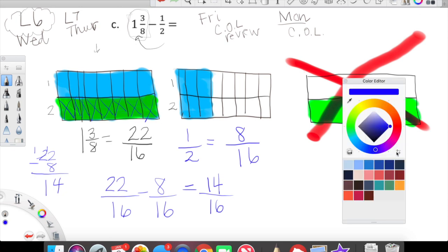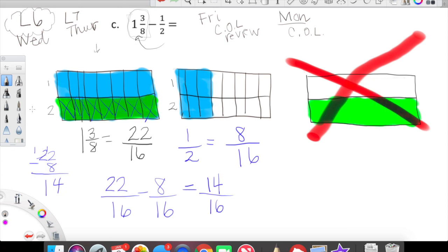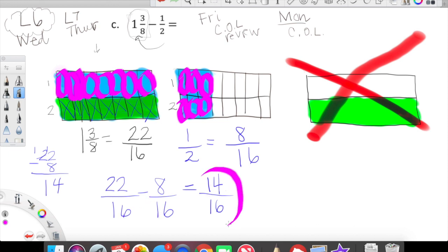One half is this one row shaded in green. We found that one half is equivalent to 1, 2, 3, 4, 5, 6, 7, 8 sixteenths. What we're looking at here is that one and three eighths is equivalent to 22 sixteenths and one half is equal to eight sixteenths. So we're looking at 22 sixteenths minus eight sixteenths. What is 22 minus eight? 14. We have fourteen sixteenths. Indeed. I've just modeled 22 sixteenths minus eight sixteenths is equal to fourteen sixteenths. Booyah!